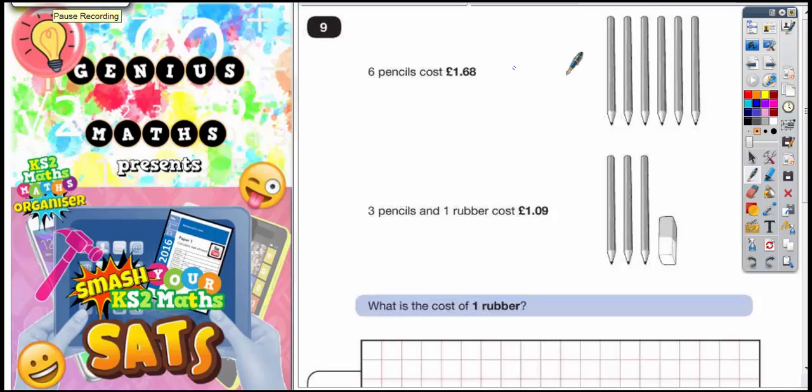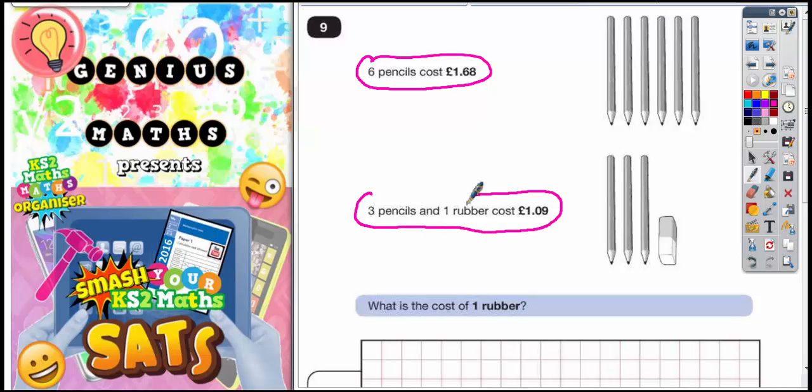Question number nine. Six pencils cost £1.68. Three pencils and one rubber cost £1.09. And we've got to find out what's the cost of the rubber here.